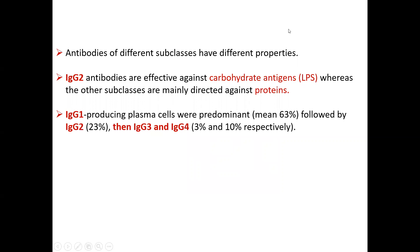The antibody of different subclasses have different properties. Even the same antibodies but certain subclasses have certain concentrations, availability, and even functions. For example, immunoglobulin G2 antibodies are effective against carbohydrate antigens, such as LPS, while the other subclasses are mainly directed against proteins. Immunoglobulin G1 producing plasma cells — which is the predominant one — followed by IgG2, IgG3, and IgG4. IgG1 is 63%, then IgG2 at 23%, and then IgG3 and IgG4 at about 3% and 10% respectively.